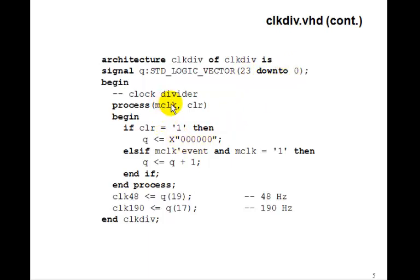Now it's mclock and clear coming in. If clear is 1, we'll set Q to all 0s. Here I've indicated, since it's a hex number, since I'm going to have 6 hex digits in 24 bits, I can write it x and double quote 000000. I could have put the others go to 0 here as well. And then else, if mclock tick event and mclock equals 1, mclock's the input here, then Q just gets Q plus 1. So, this is our counter.